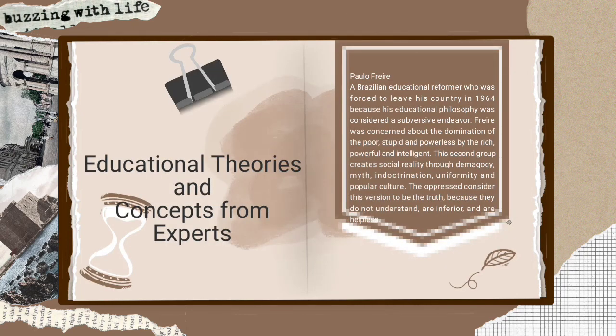And the last is educational theories and concepts from experts. Paulo Freire, a Brazilian educational reformer who was forced to leave his country in 1964 because his educational philosophy was considered subversive. He was concerned about the domination of the poor, powerless, and uneducated by the rich, powerful, and intelligent.